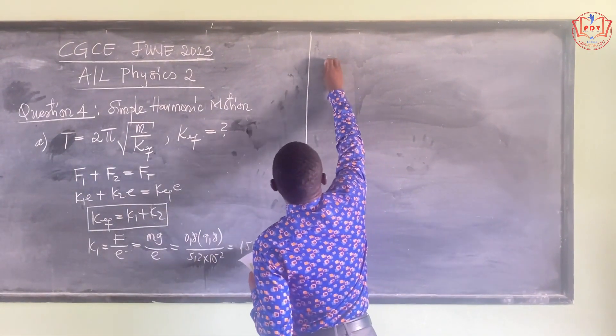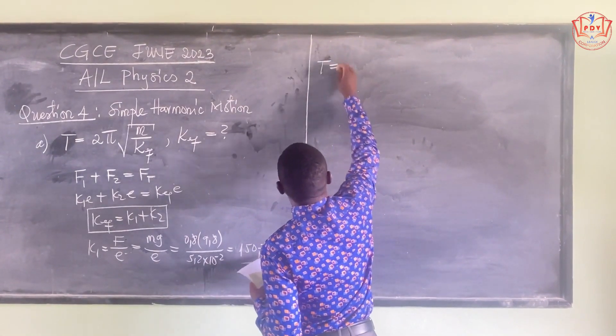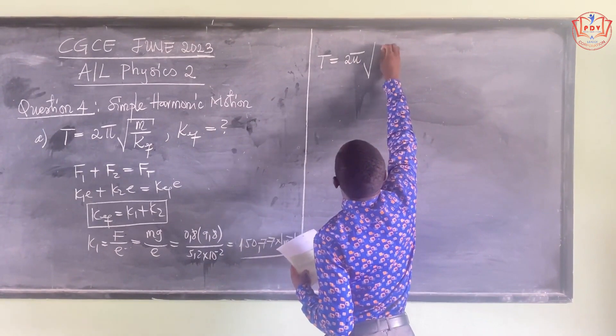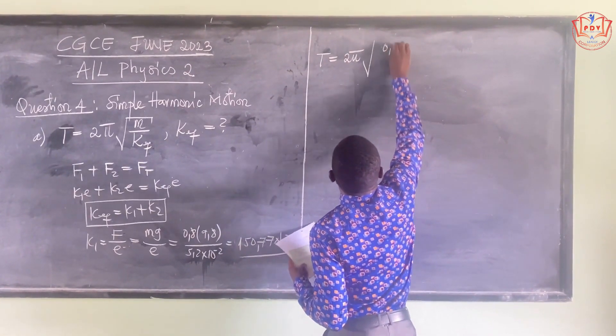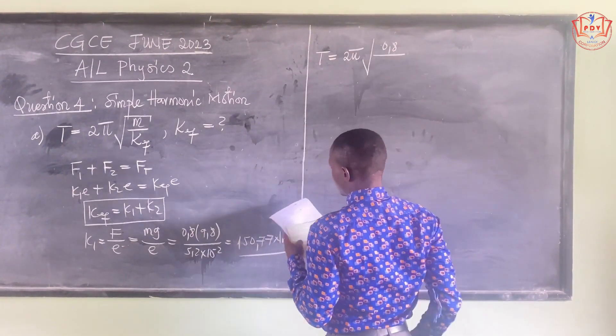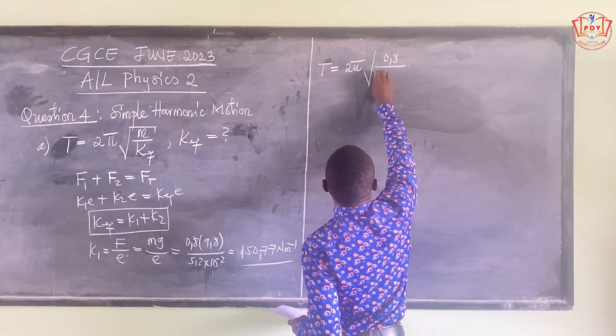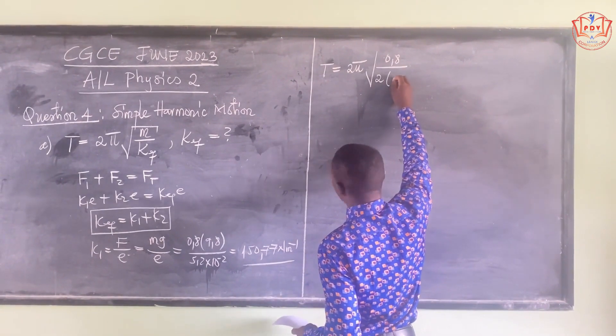Then, our period of oscillation will be 2π times the square root of the mass 0.8, divided by the equivalent spring constant which is k1 plus k2, or 2 times k1.